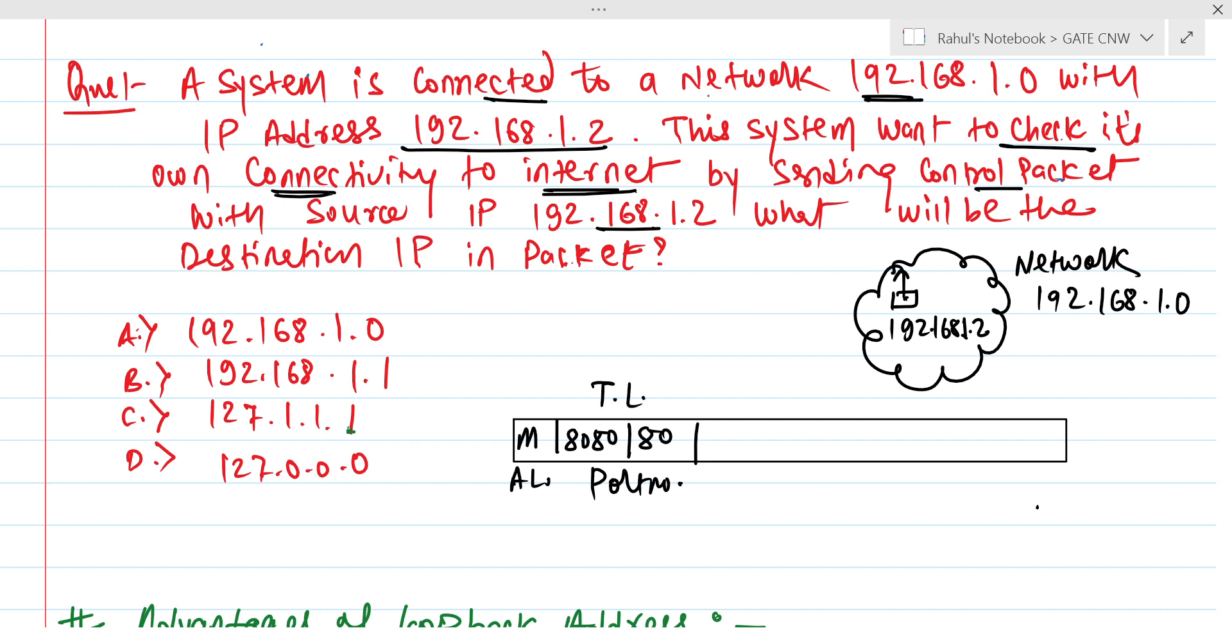Thereafter we need to add IP address of source which is requesting, that is 192.168.1.2, and after that there is the destination address part. This complete part, source address and destination address, is added by network layer.